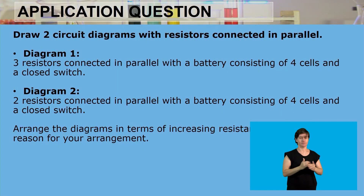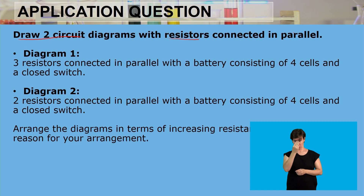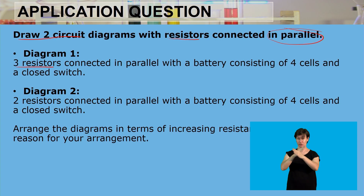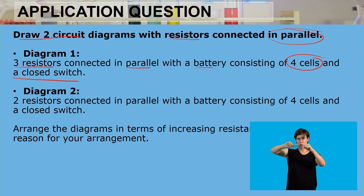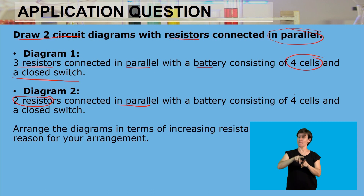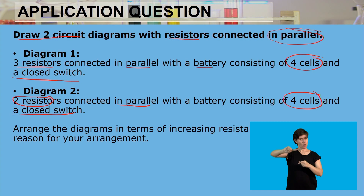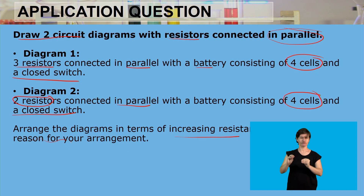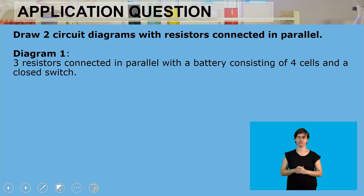The next question asks us to draw two circuit diagrams with resistors connected in parallel. Diagram 1 must have three resistors connected in parallel with a battery of four cells and a closed switch. Diagram 2 must have two resistors connected in parallel with a battery of four cells and a closed switch. Then we need to arrange the diagrams in terms of increasing resistance and give a reason.